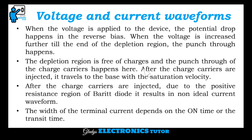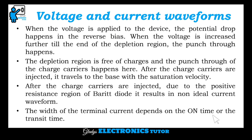Initially the depletion region will be free of charges, and after the charge carriers are injected, they travel to the base with the saturation velocity. After the charge carriers are injected in the depletion region, due to the positive resistance region of BARITT Diode, it results in a non-ideal current waveform. The width of the terminal current depends on the on-time or the transit time.